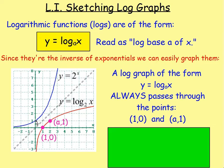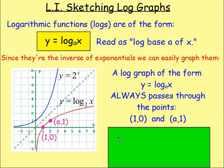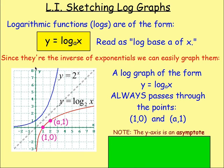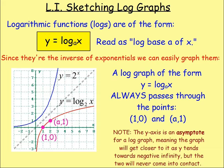We know that exponentials always pass through the points (0, 1) and (1, a). If you flip the x and y coordinates, we get the points (1, 0) and (a, 1). These are two points that log graphs of the form y equals log base a of x will always pass through. Because we've got 2 to the power of x, the inverse is log base 2 of x, which passes through (1, 0) and (2, 1). If it was log base 3 of x, that would pass through (1, 0) and (3, 1). If it was log base 7 of x, that would pass through (7, 1).